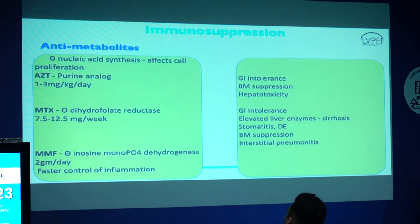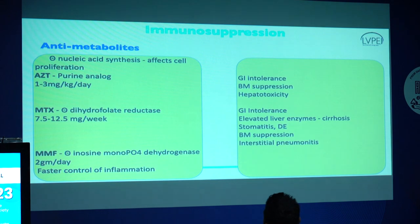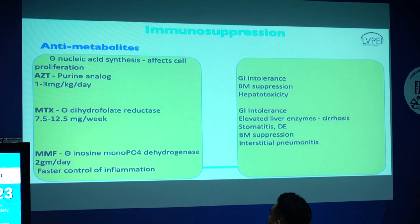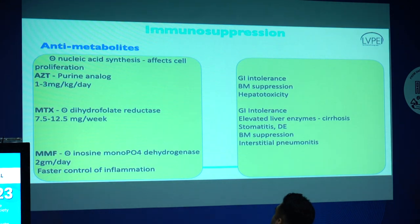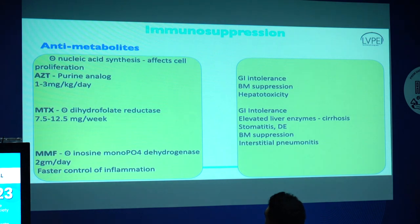With methotrexate, we usually start with 7.5 milligrams and increase it, typically giving about 12.5 milligrams per week — we can move up to 20. If the patient requires more than 20 milligrams for controlling inflammation, we should switch to subcutaneous because the bioavailability of the drug when given orally is much less as it doesn't get absorbed well. We should keep that in mind when dealing with methotrexate.